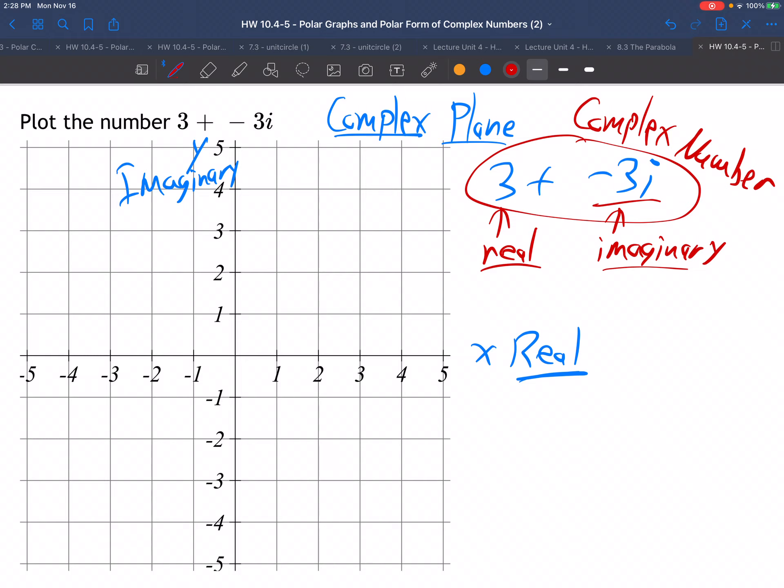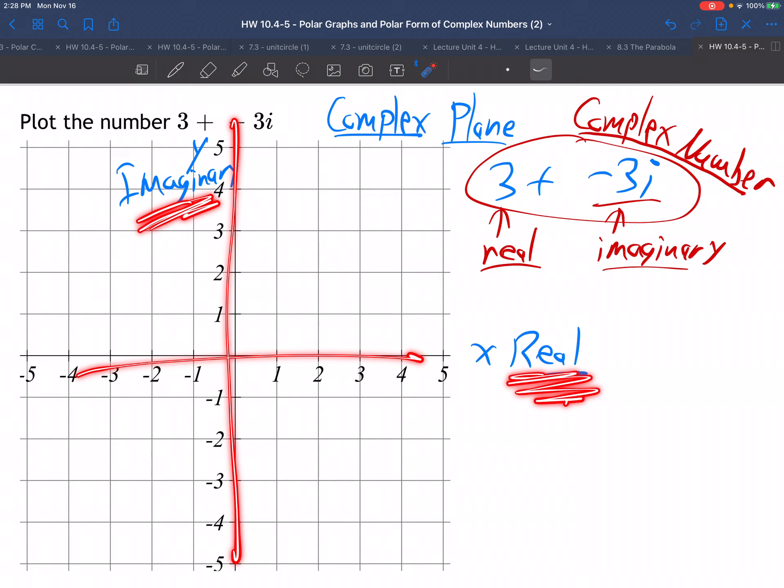So when a real part and an imaginary part get together in one number, we call that a complex number. And we like to graph those on the complex plane. The x-axis is the real part of the number, and the y-axis is the imaginary part of the number.